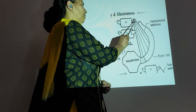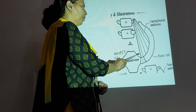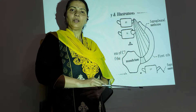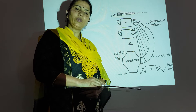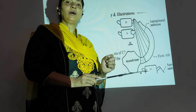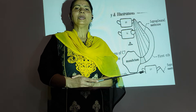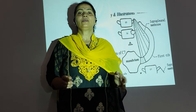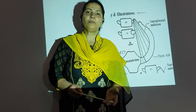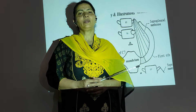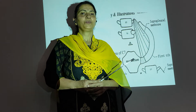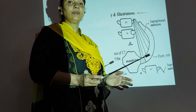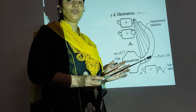This is the medial border and this is the lateral border. Now there is the attachment. When we say that we have got a fascia in the form of a membrane, there should be some attachment. As I have already said, it is triangular in shape.